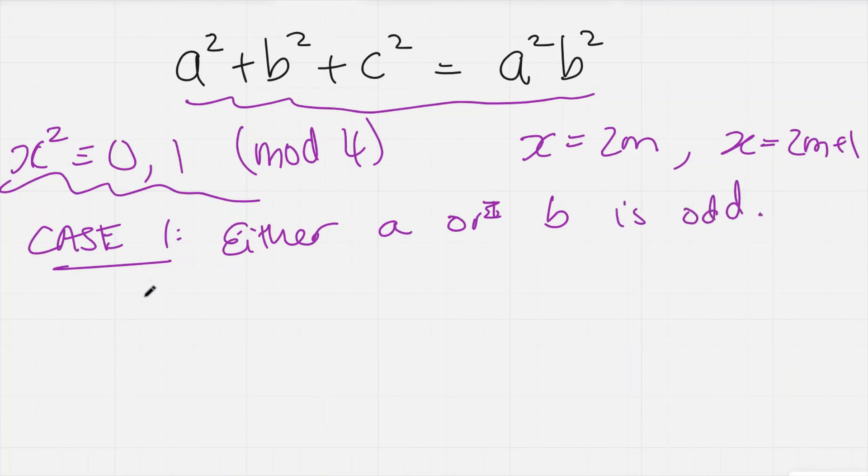So either a or b is odd, and it doesn't matter which because of the symmetry of this equation. So without loss of generality, let's say a is odd. And again, this argument works if both of them are odd as well—it doesn't matter.